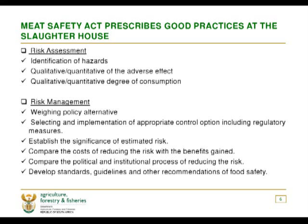Meat inspection must ensure that the following are implemented: risk management, identification of hazards — whether biological, chemical, or physical — qualitative-quantitative assessment of the adverse effect and degree of consumption. Risk management involves weighing policy alternatives: should anything go wrong, what else should we do? This includes selecting and implementing appropriate control options including regulatory measures, and establishing the significant estimated risk.